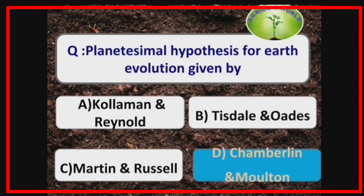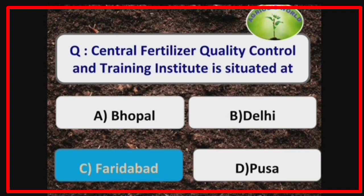The planetesimal hypothesis for earth evolution was given by Chamberlin and Moulton. The Central Fertilizer Quality Control and Training Institute is situated at Faridabad.